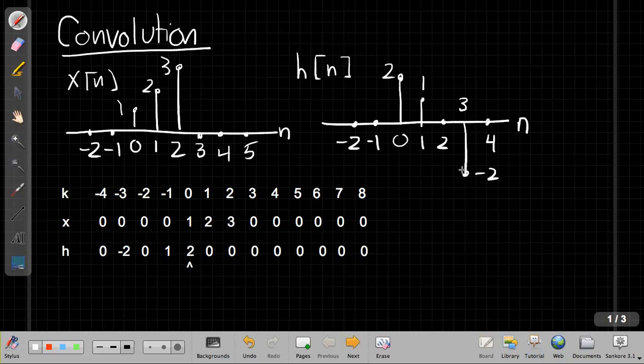So to do the convolution sum, which I guess I should have put down here to remind us, or maybe I'll put it up here. So again, we're just implementing this. This is another technique for evaluating this sum as k goes from minus infinity to plus infinity of x of k times h of n minus k.